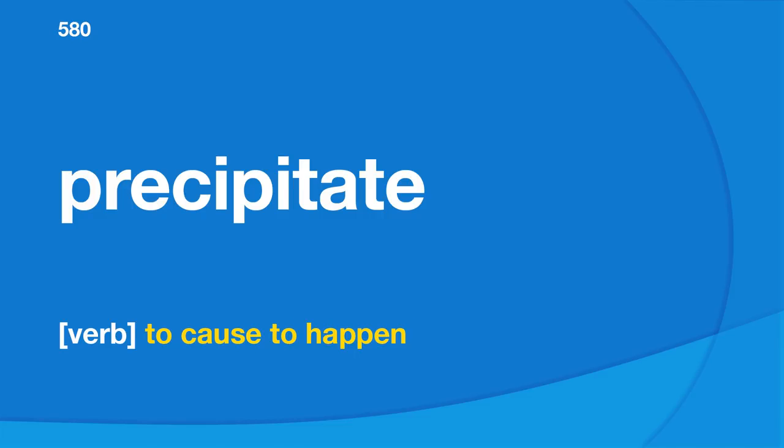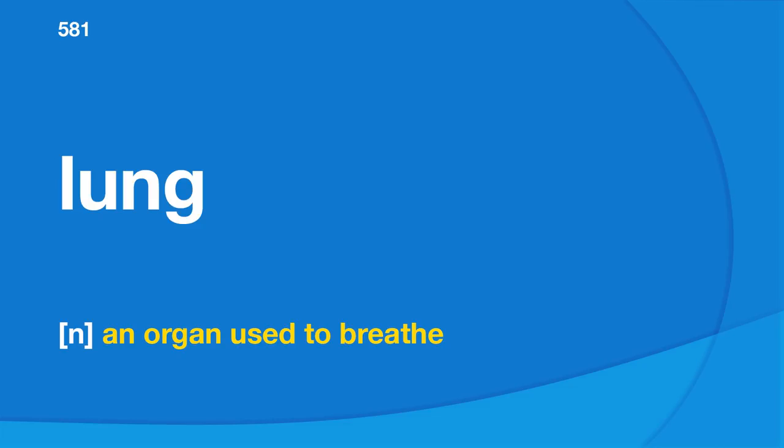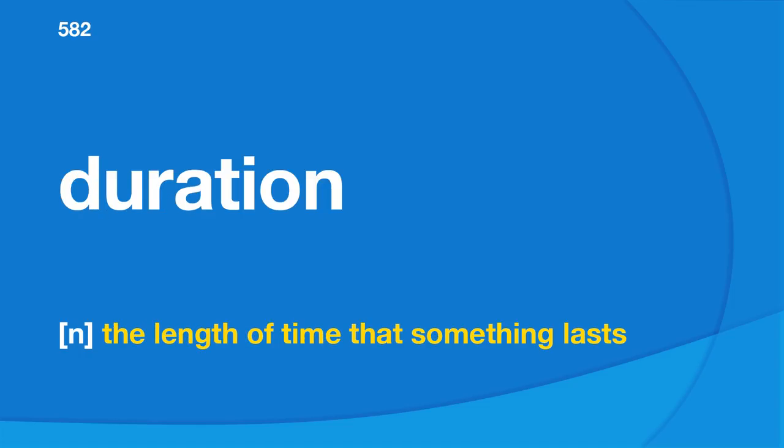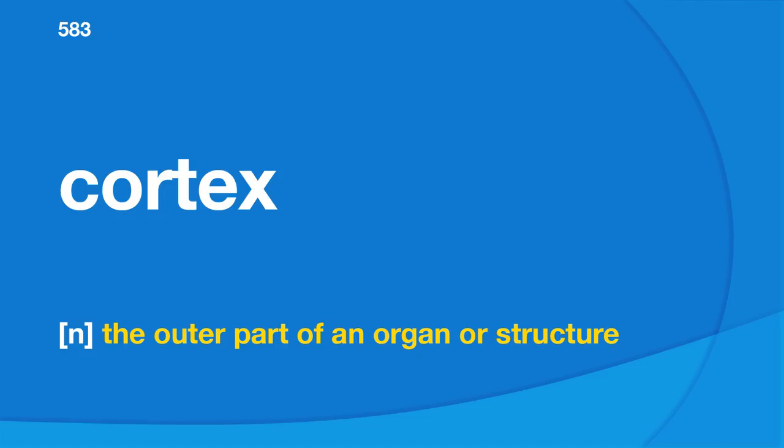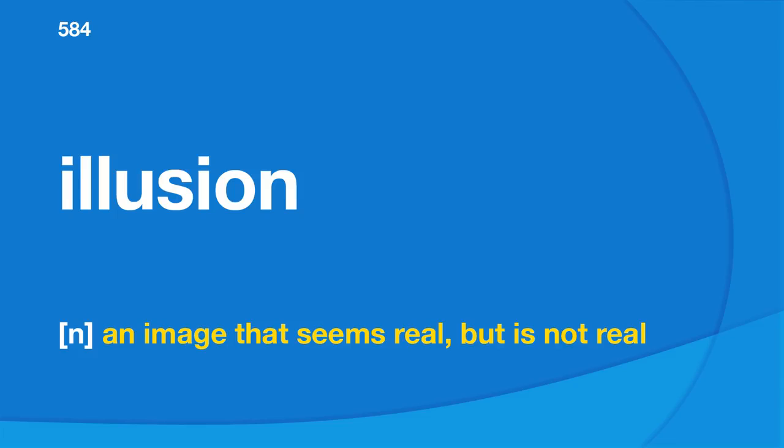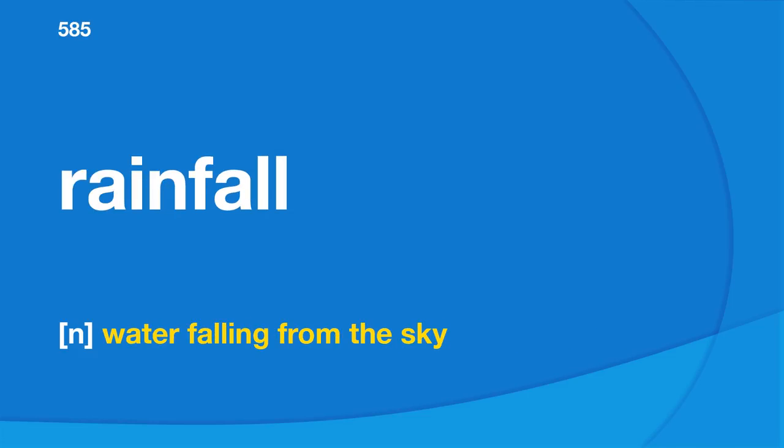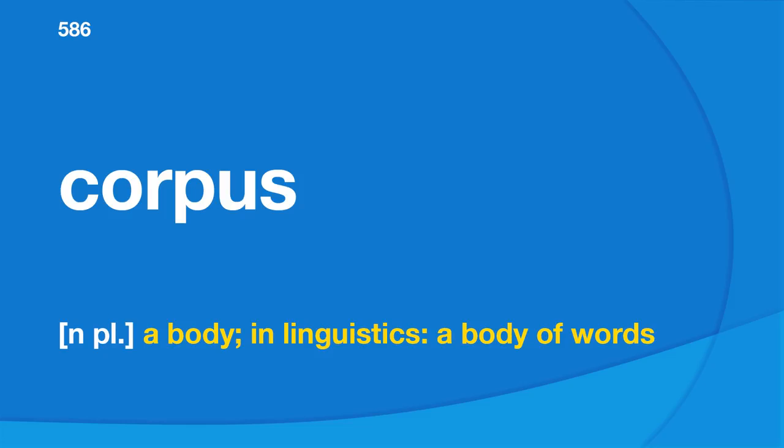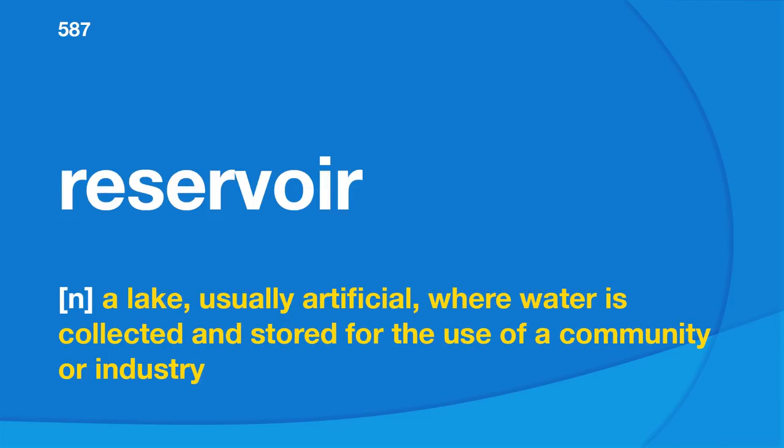Lung: an organ used to breathe. Duration: the length of time that something lasts. Cortex: the outer part of an organ or structure. Illusion: an image that seems real but is not real. Rainfall: water falling from the sky. Corpus: a body in linguistics, a body of words. Reservoir: a lake, usually artificial, where water is collected and stored for the use of a community or industry. Pardon: to excuse.